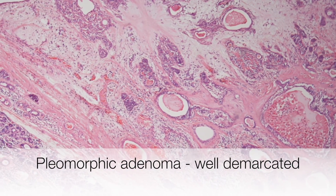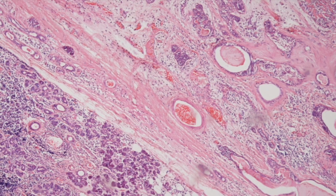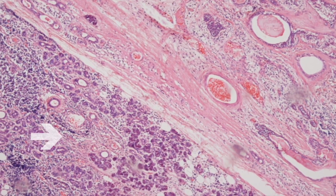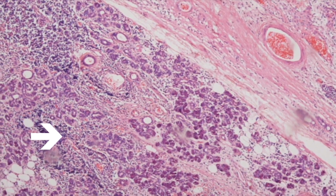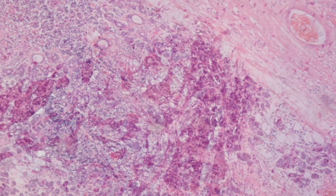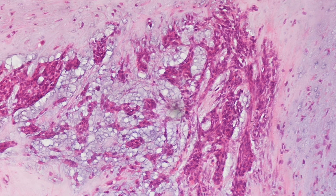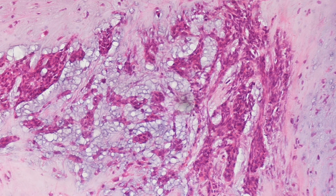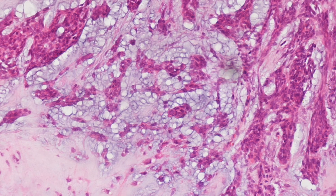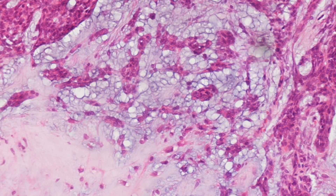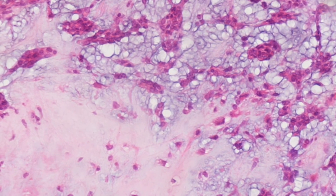This is a low power view of a pleomorphic adenoma and you can see how well demarcated it is from the adjacent normal parotid gland. In this pleomorphic adenoma the epithelial elements are composed of solid sheets of epithelial cells which gradually appear to melt into the mesenchymal element of the pleomorphic adenoma.